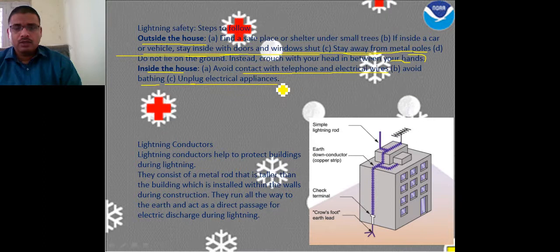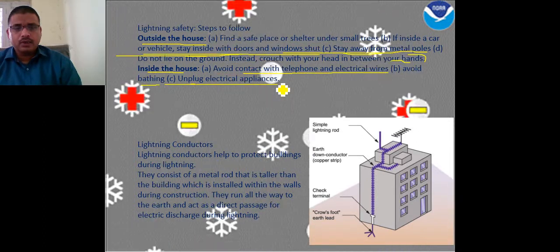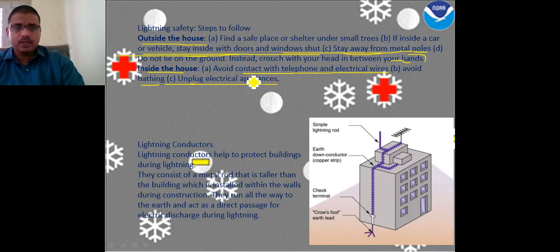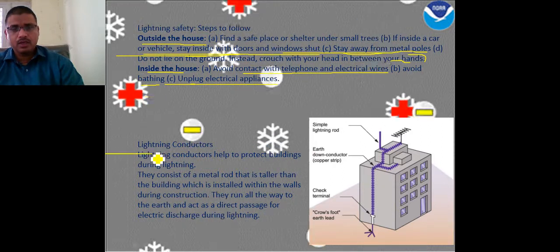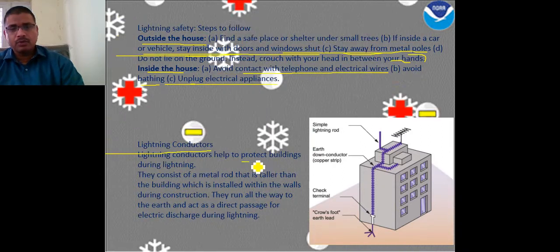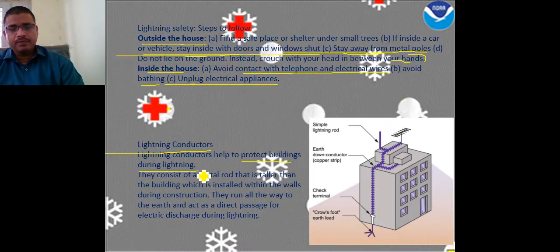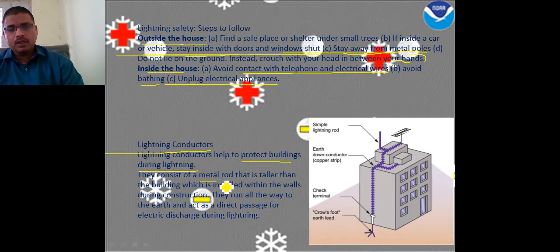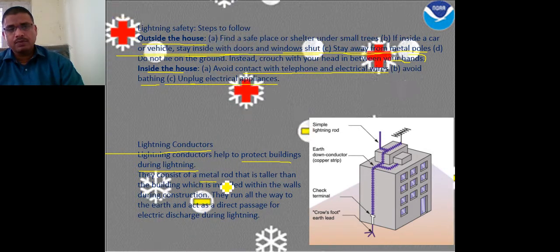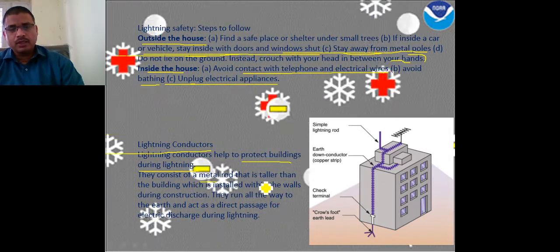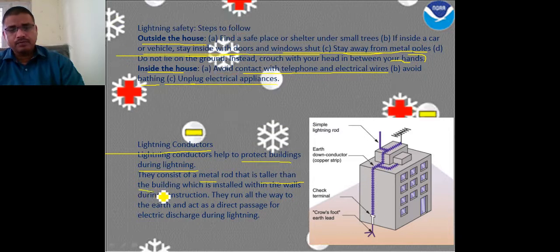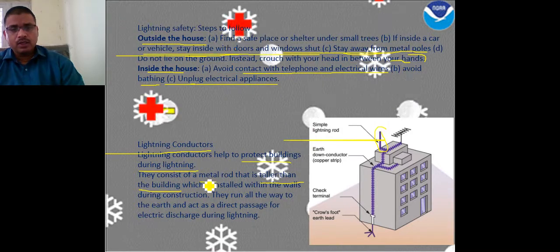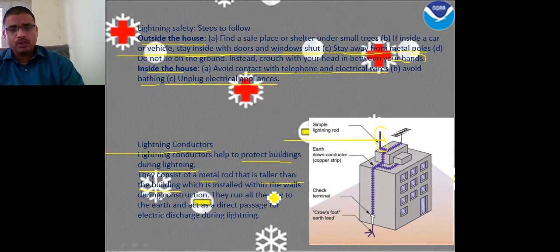Another important device is the lightning conductor. A lightning conductor is a material that protects buildings during lightning. It consists of a metal rod that is taller than the building and is installed in the wall during construction. This rod runs all the way to the earth's surface.